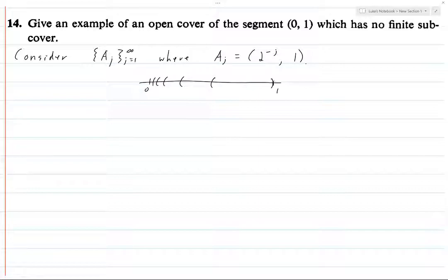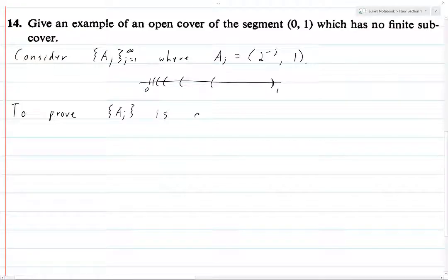Alright, so let's actually work through the details of how we prove that this is an open cover which has no finite sub-cover. So first we need to prove that it's an open cover. To prove that a j like this is an open cover,